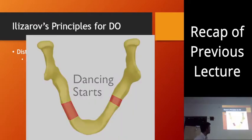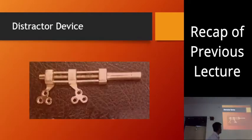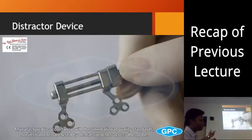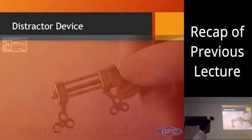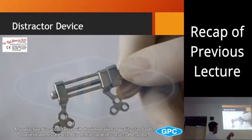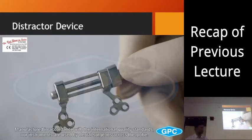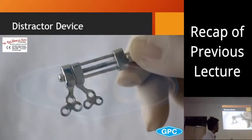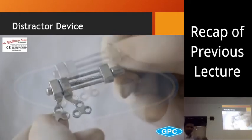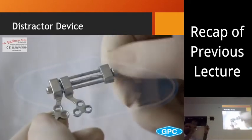This is called dancing distraction. Regarding the distractor device, these two plates are used to fix the distractor device to the two segments. Then we start activating the distractor device and the two segments are pulled apart. We have precise control of how much movement we want to give.